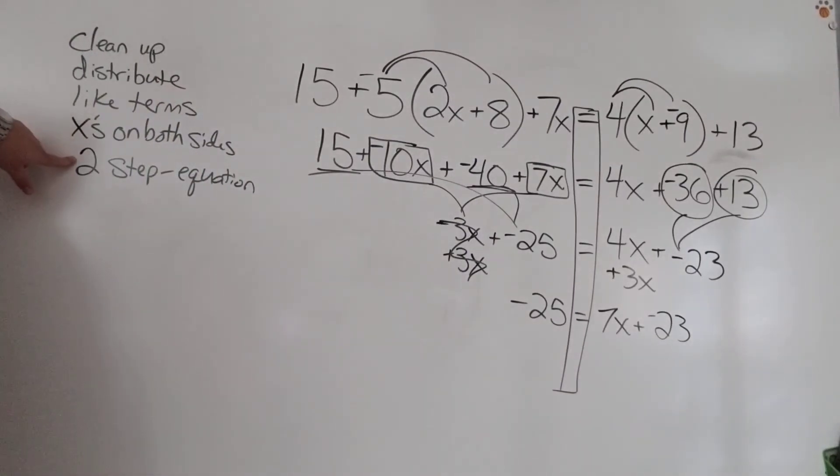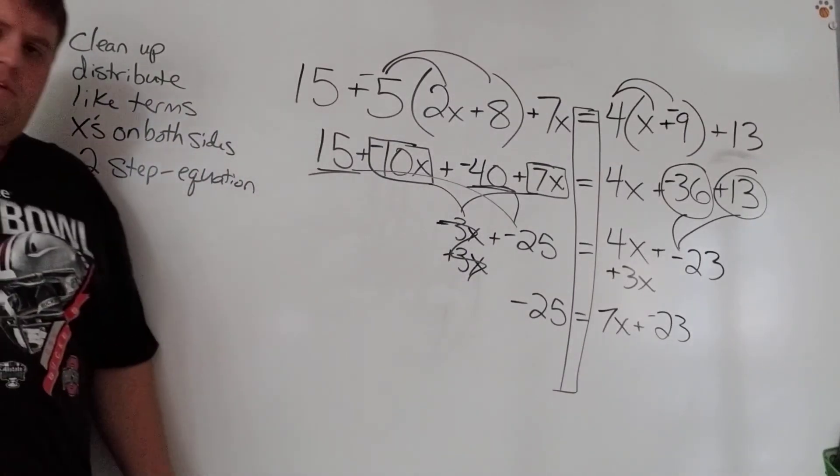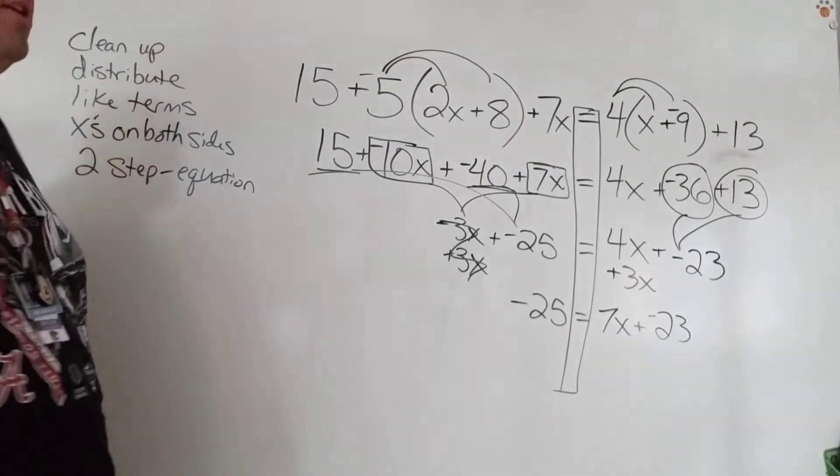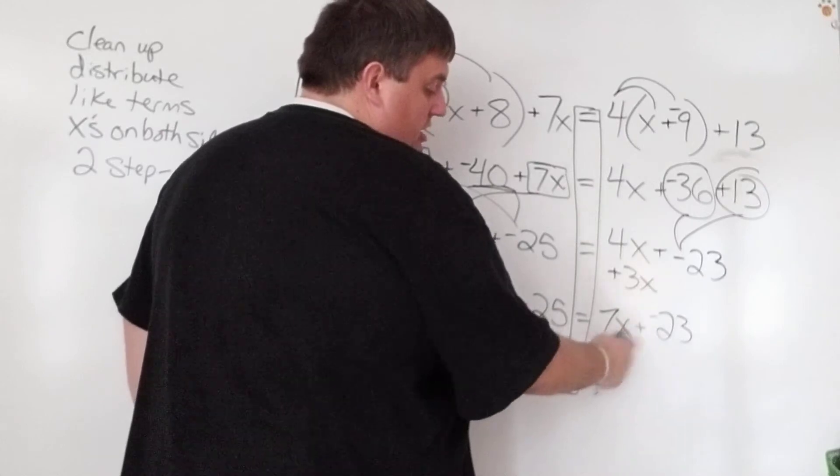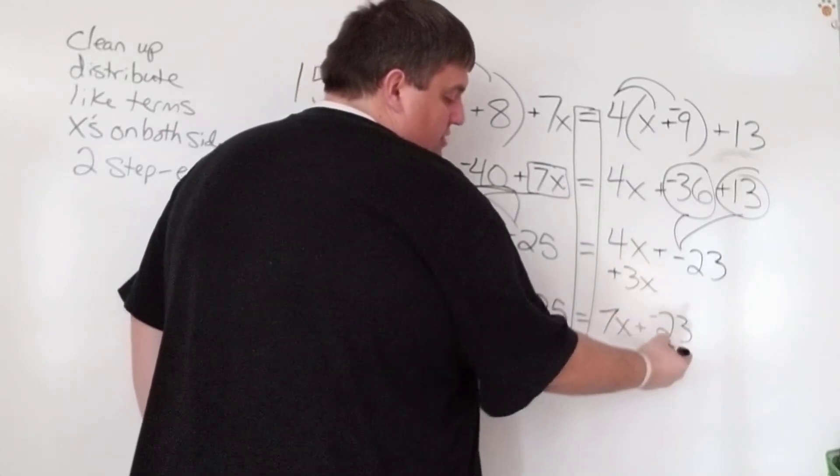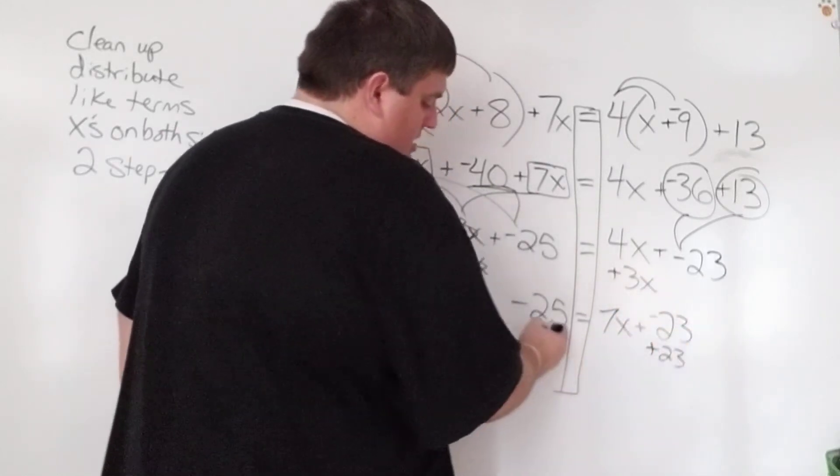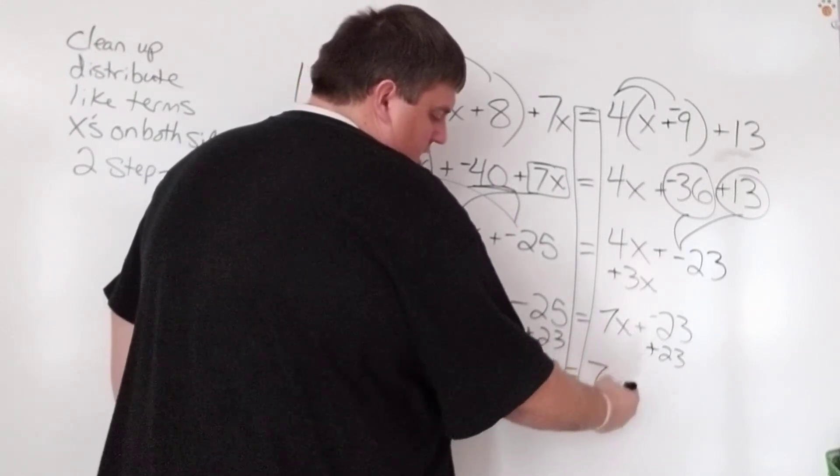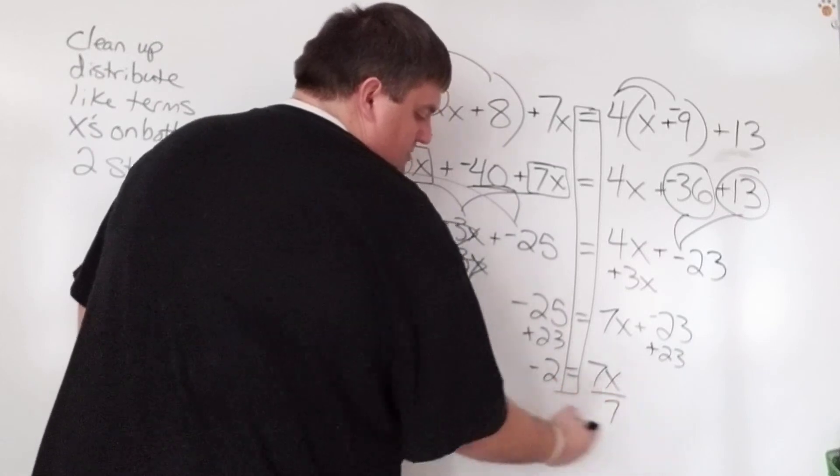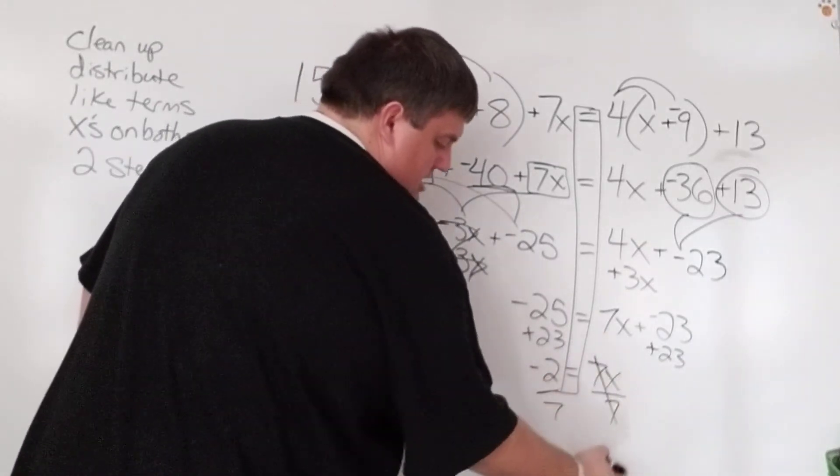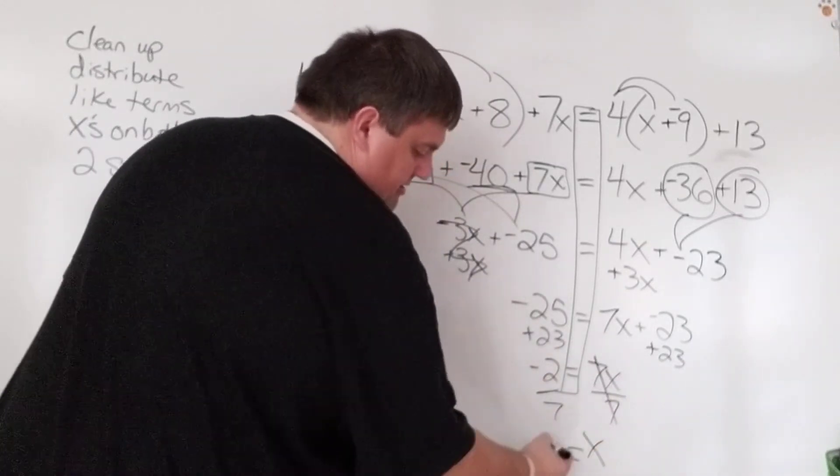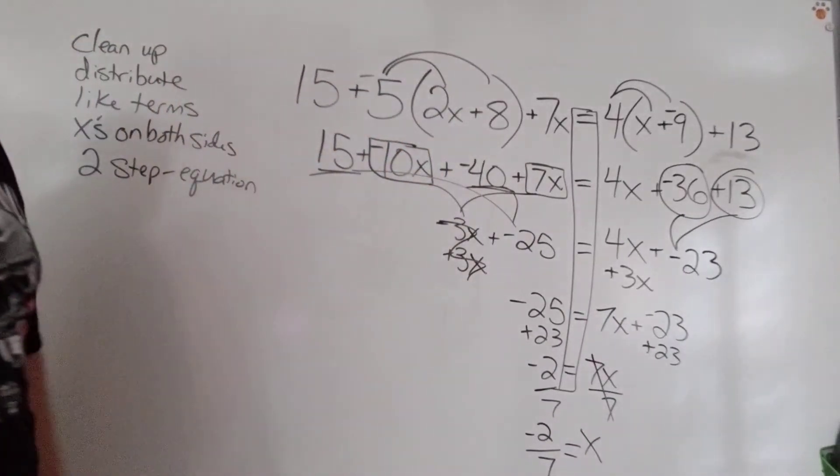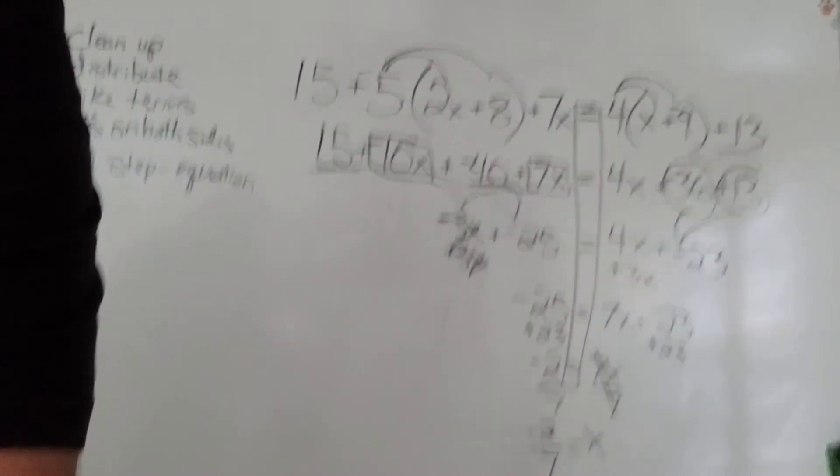And now if you look at my checklist, notice that I am down to a two-step equation, which we can all solve from this point. If you wanted to switch it around, you could. Here's my x. I want to get rid of negative 23. So I'm going to add 23. When I add 23, that's negative 2 equals 7x. And then my last step would be just divide by 7. And I have my answer. Notice it's a fraction. That's okay. We're going to leave it as a fraction. Negative 2 sevenths.